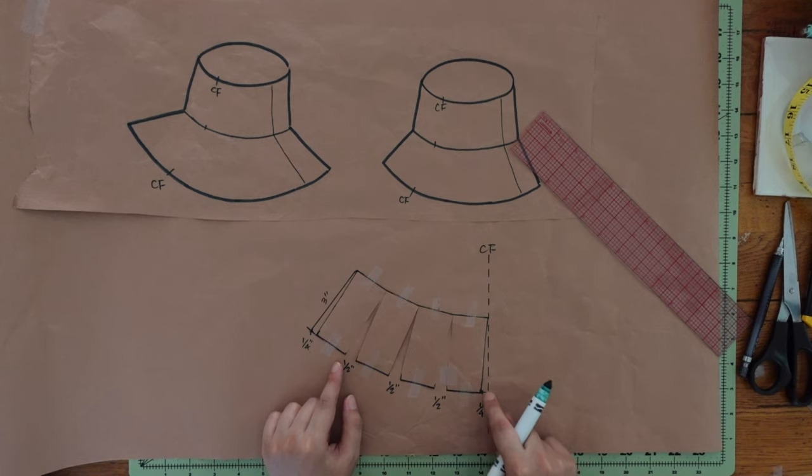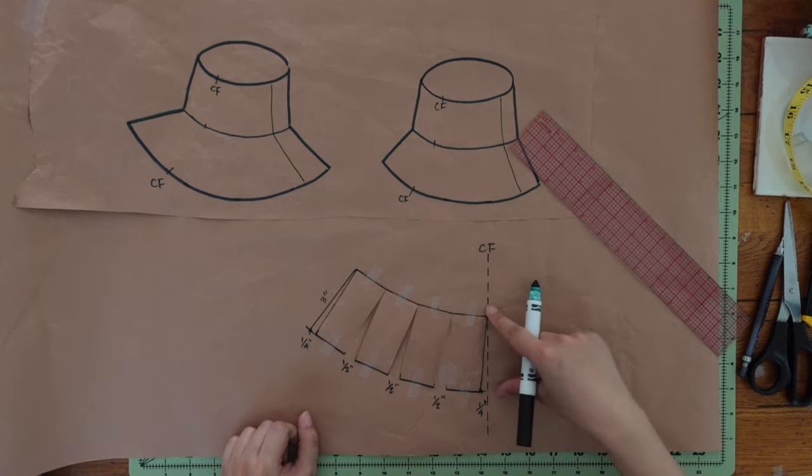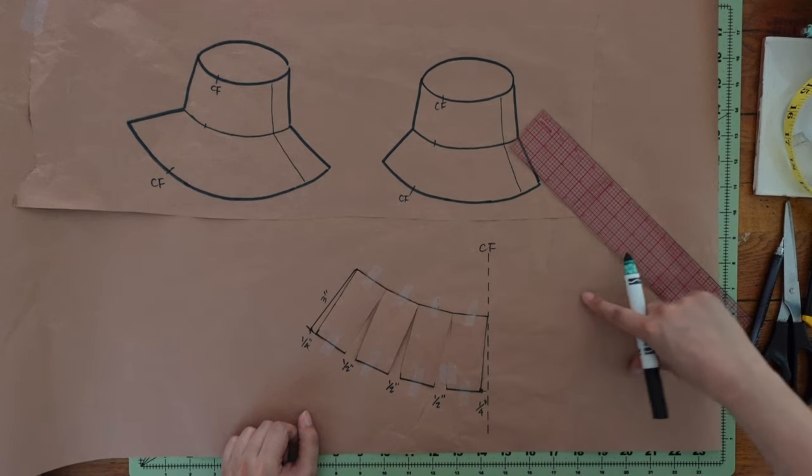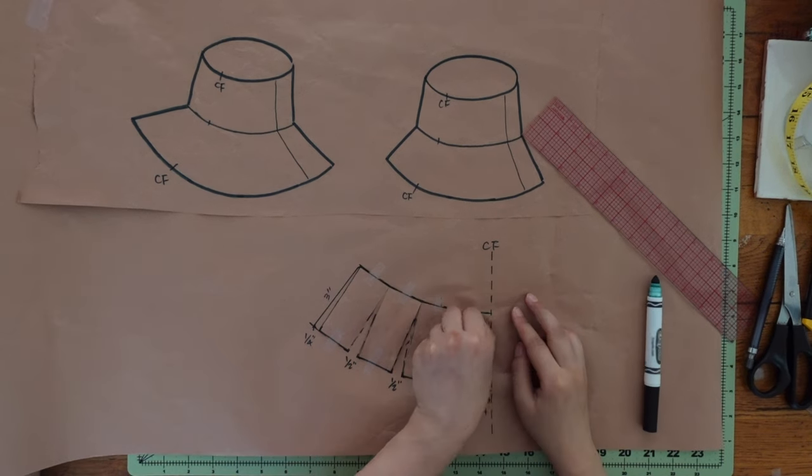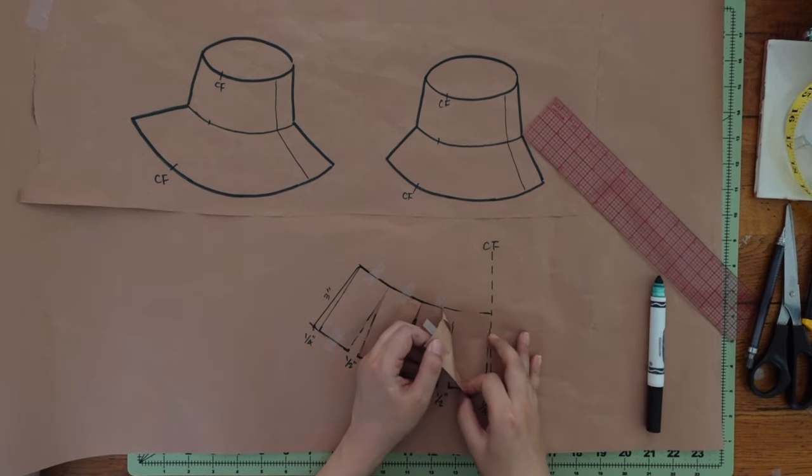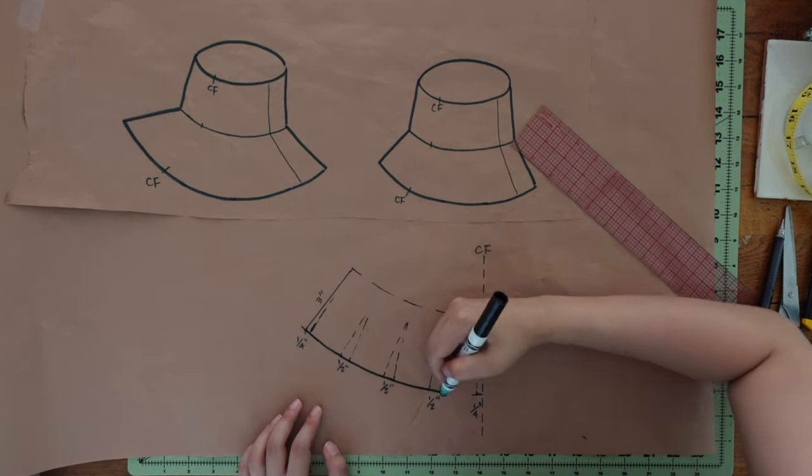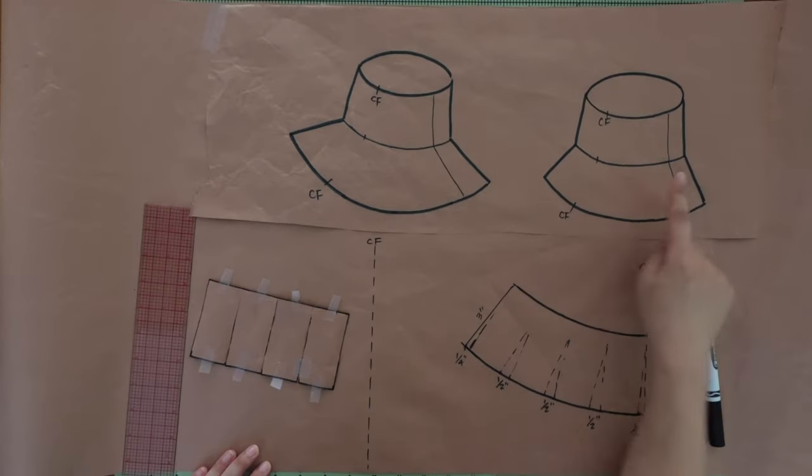The reason why I added quarter inch at the ends, it's because when you cut this shape on fold at the center front, you get half inch total at the center front. So that was how I drafted this narrow brim.